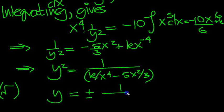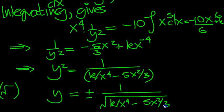We end up with y is equal to plus or minus. And it's going to be 1 over the square root of. So square root of the top over the square root of the bottom. k over x to the 4 minus 5x squared over 3. There we go.